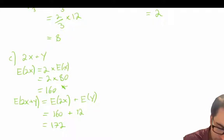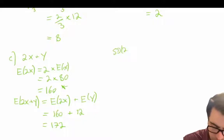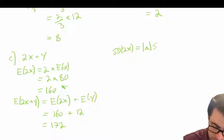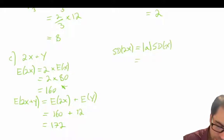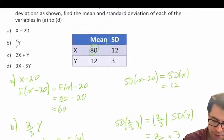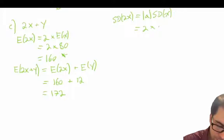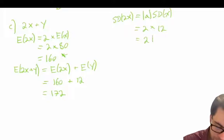For the standard deviation, we first need to find our standard deviation of 2X. We know that when we multiply a constant to our standard deviation, it's equal to the absolute value of that constant times our standard deviation of X. So 2 times our standard deviation of X, which is given to us as 12, gives us 2 times 12, which is equal to 24.